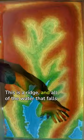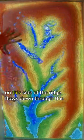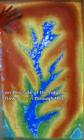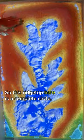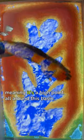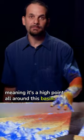This is a ridge and all the water that falls on this side of the ridge flows down through this network of drainages. So this ridge top here is a complete circle, meaning it's a high point all around this basin.